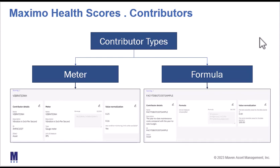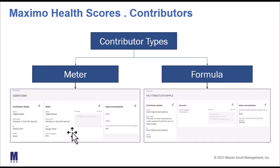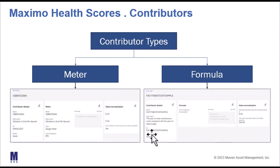The two contributor types are meter and formula. A meter can be brought in directly from Maximo Manage, and we can use condition monitoring points to define good and not-so-good limits. For a formula, we pull on the same syntax used for Maximo formulas to define different components that measure the health of an asset.